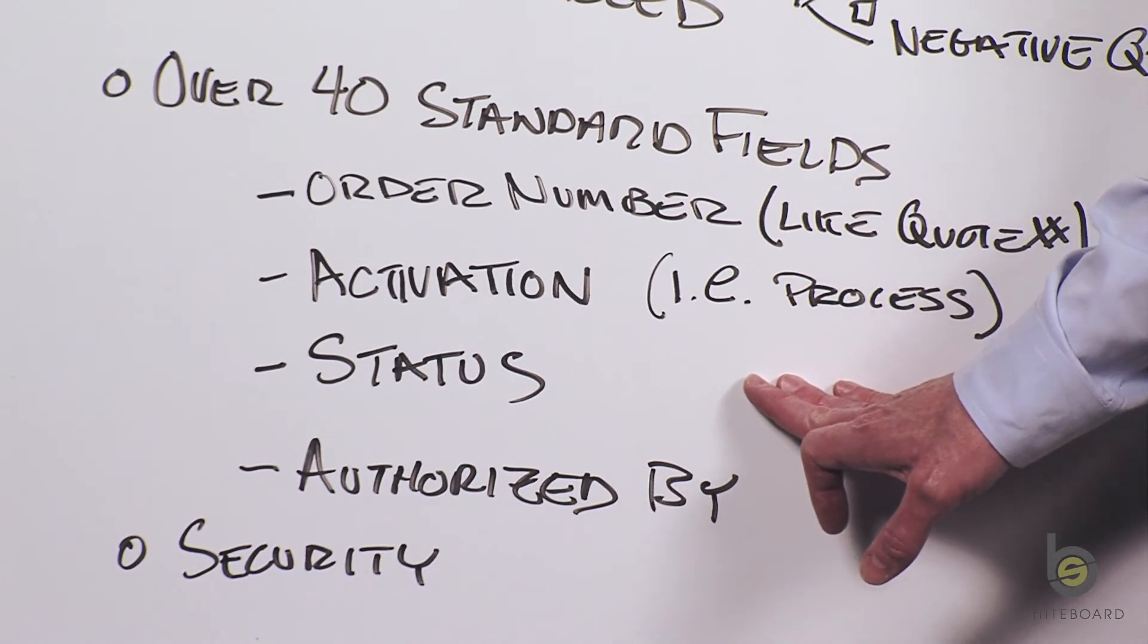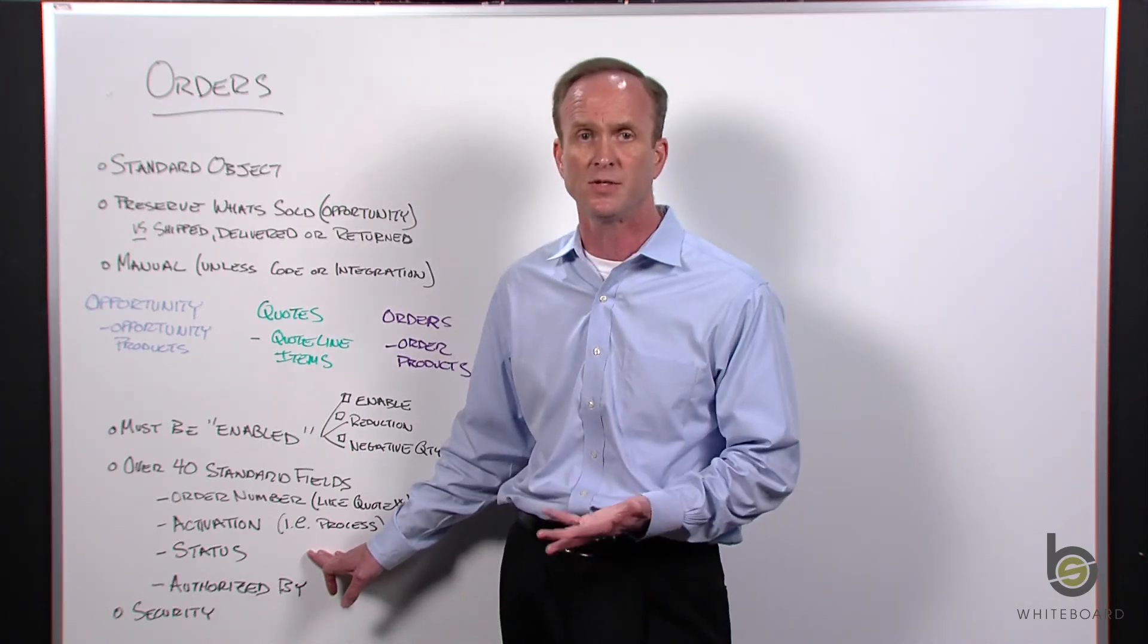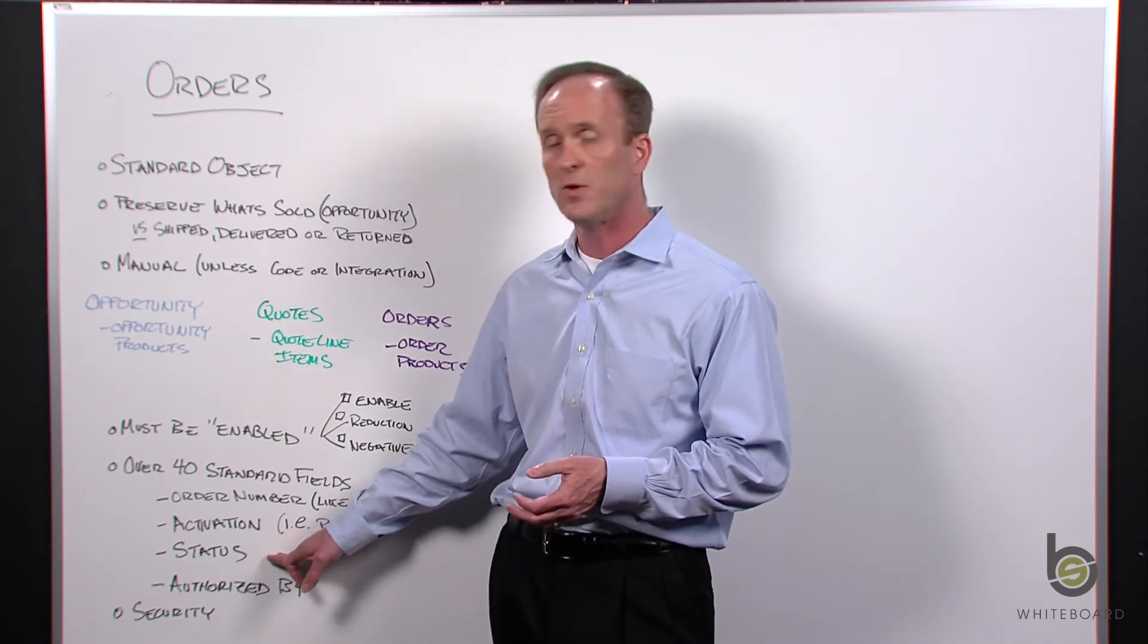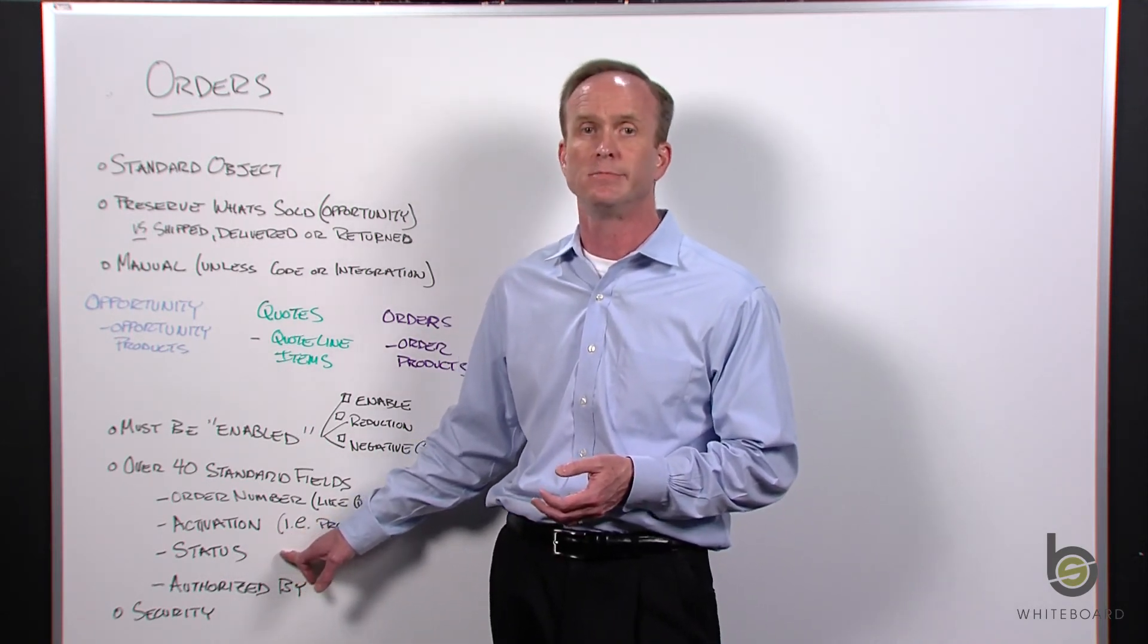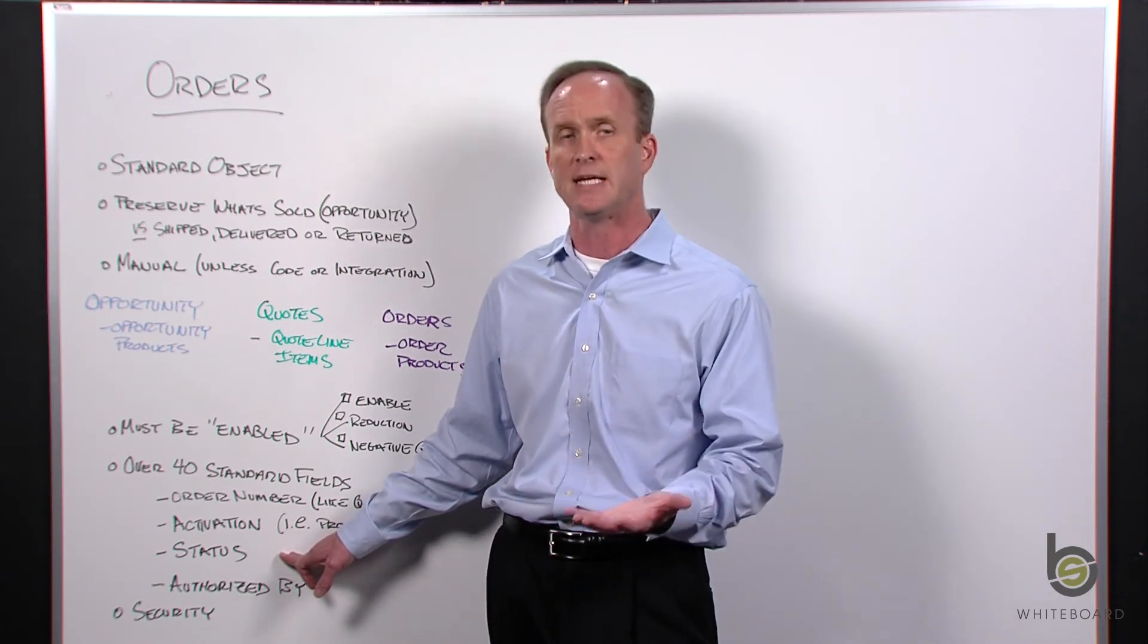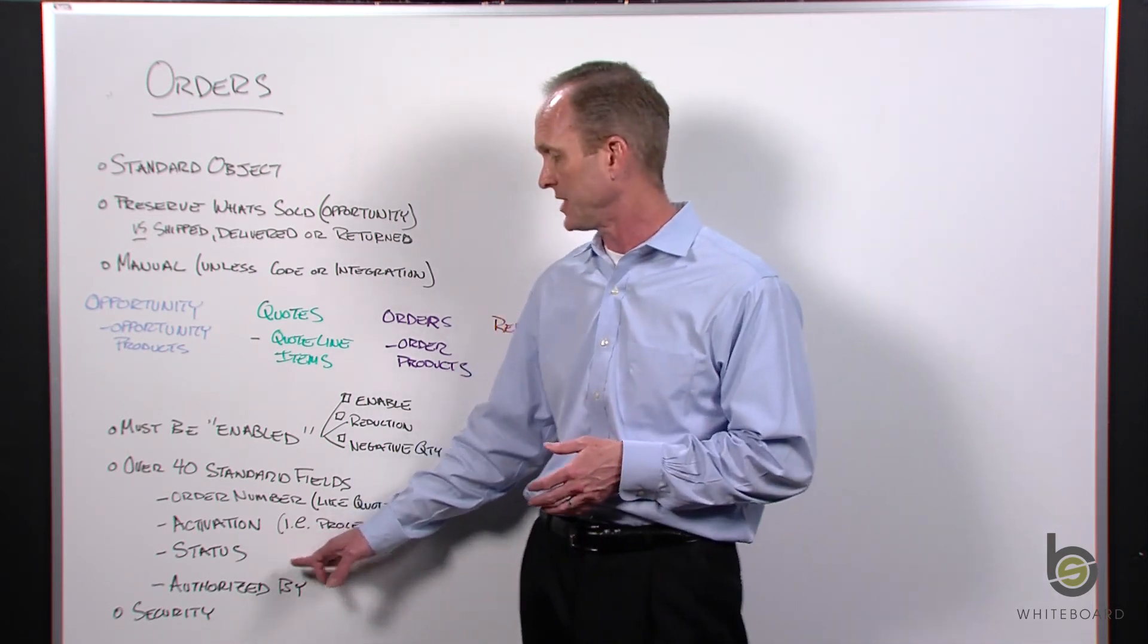And then status. Again, it's a pick list. We know from our other discussions that any time you see a status pick list, it's usually a lifecycle field. So it could be in the warehouse, being pulled, ready to ship, shipped, invoiced, whatever that status is - returned, those type of things.